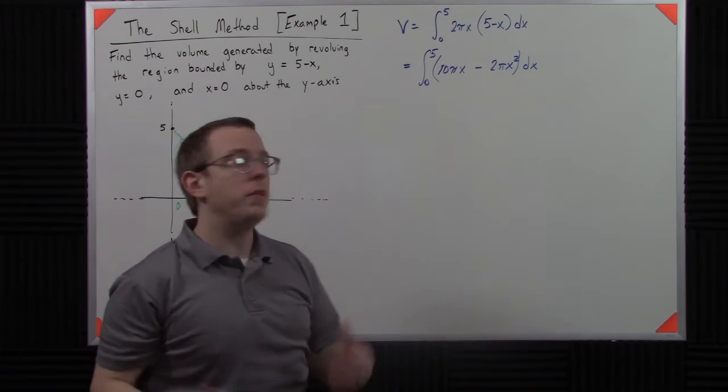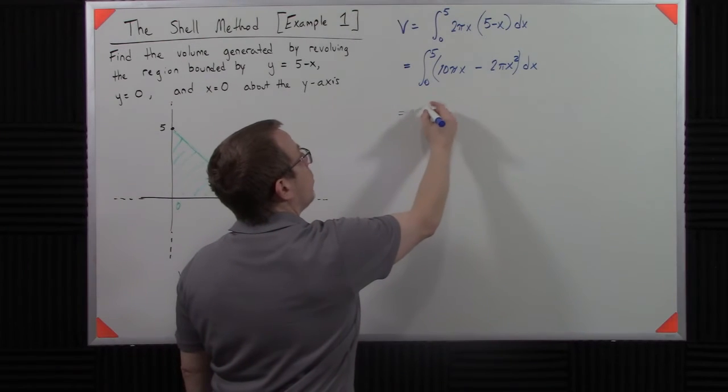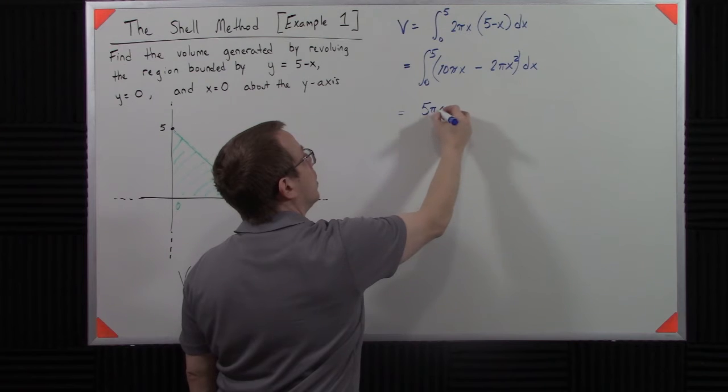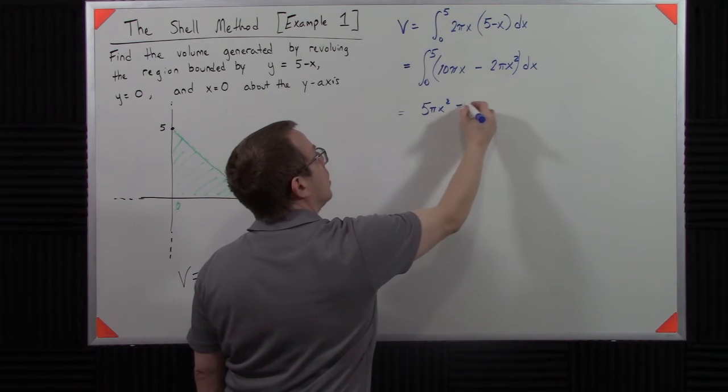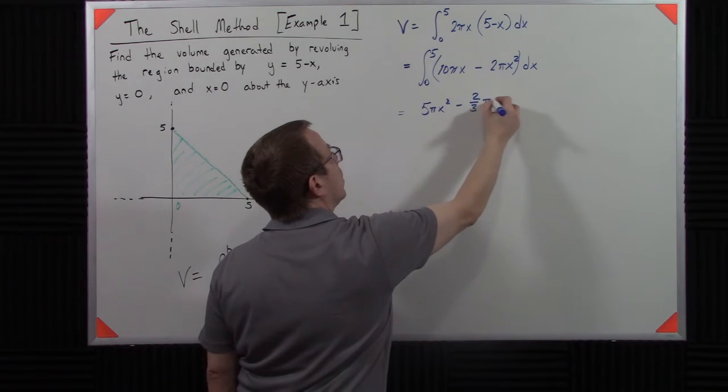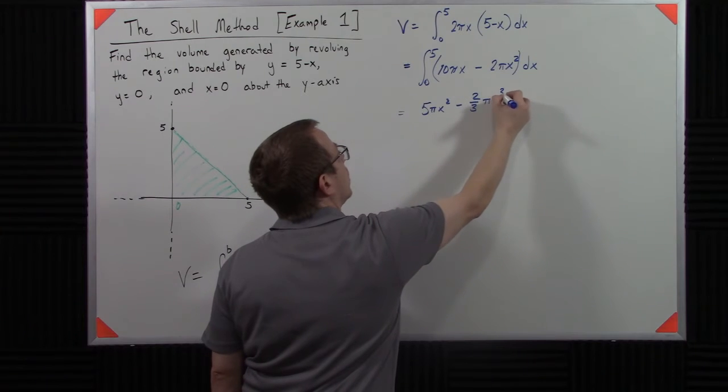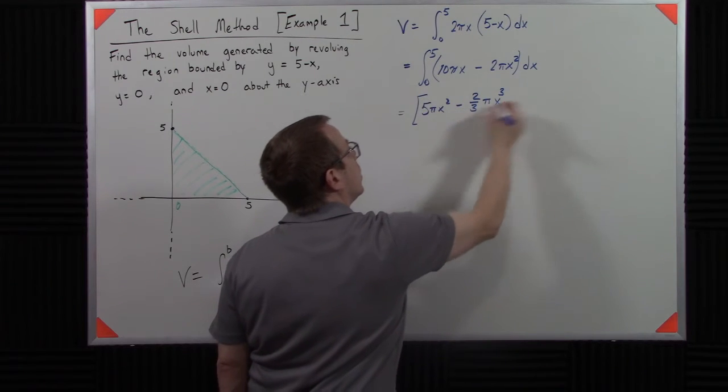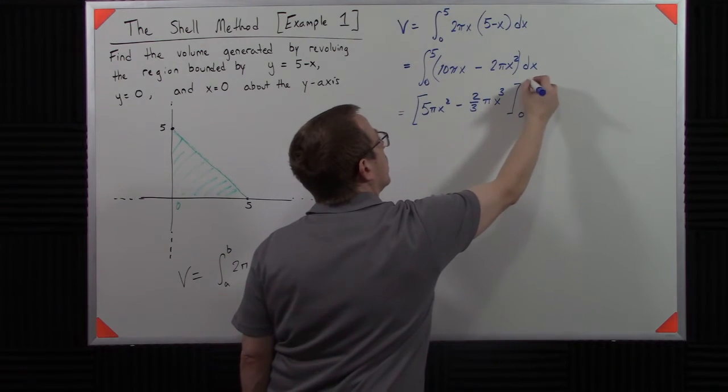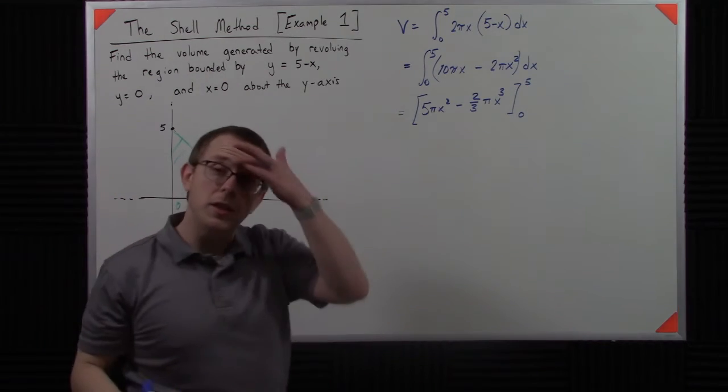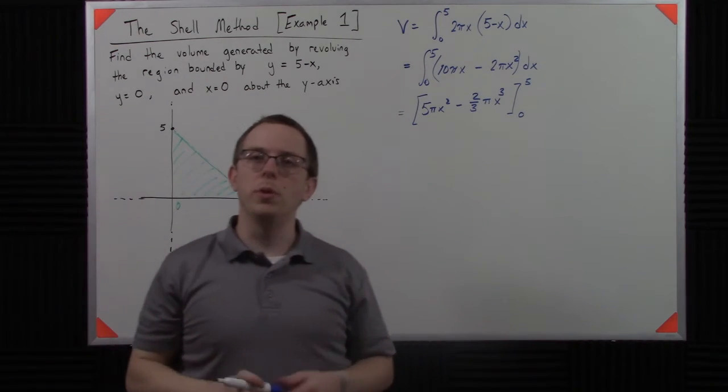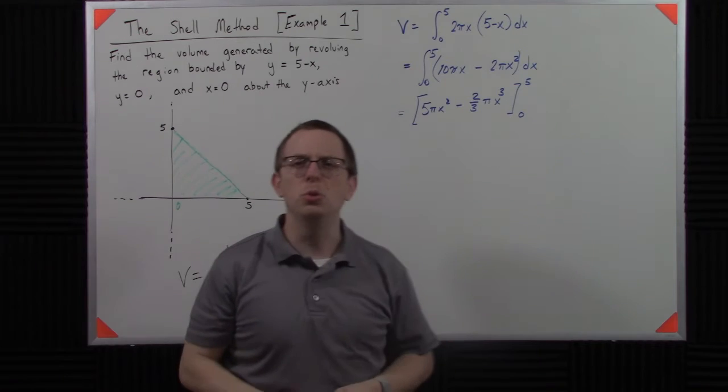So then I can take the anti-derivative of each of these. So hopefully that made sense to you, that you're comfortable enough with anti-derivatives. That is a squared. That 2 looks pretty terrible.